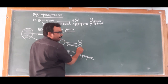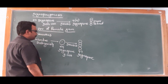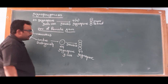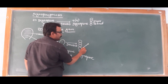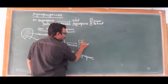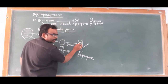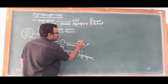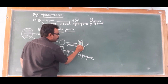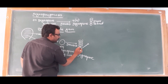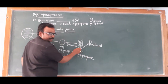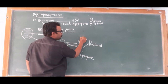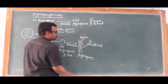Three of the megaspores are at the micropylar end and are non-functional — they will degenerate. The lowermost megaspore will become functional. So this one functional megaspore remains while the rest of the three degenerate.